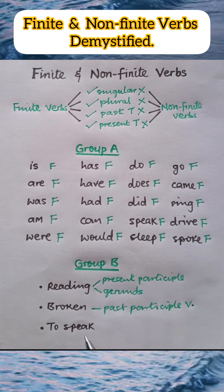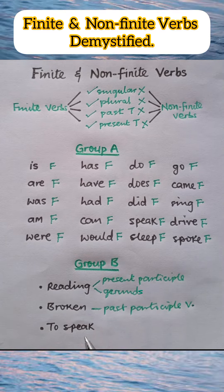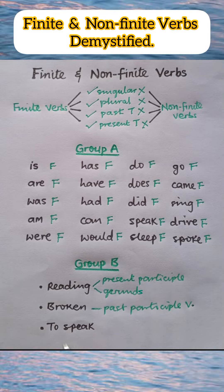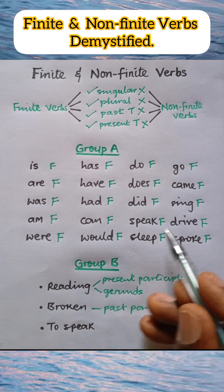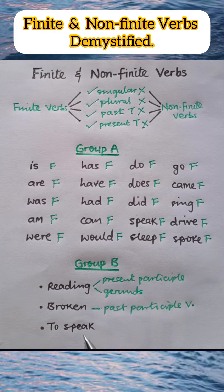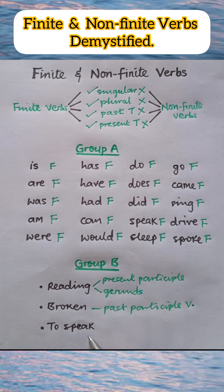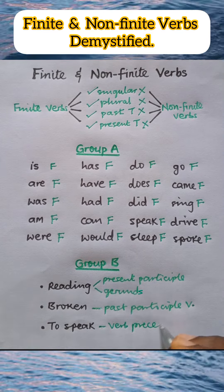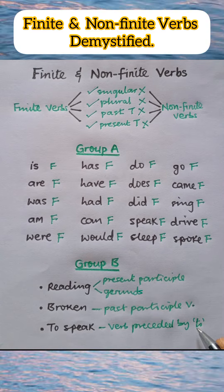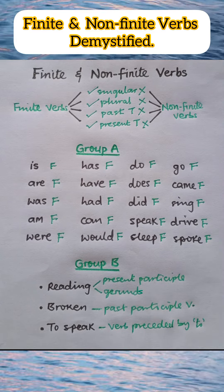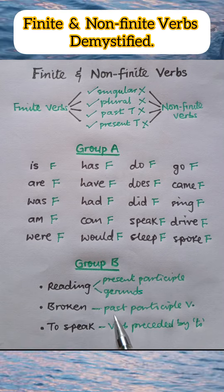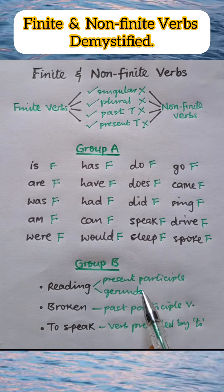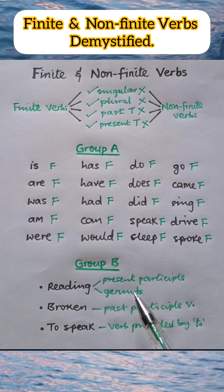Now let's go to 'to speak.' Any verb that is preceded by the infinitive 'to' — both the verb and the 'to' are considered as one. So 'to speak' is different from just 'speak.' Speak is a finite verb, whereas 'to speak' is not a finite verb. To speak is neither singular nor plural, neither past tense nor present tense — it is a non-finite verb. And indeed, all verbs preceded by 'to' are non-finite verbs. So the categories of non-finite verbs include verbs preceded by 'to,' all past participle verbs, and all verbs that end in -ing. Apart from these categories, every other verb in the English language is a finite verb.